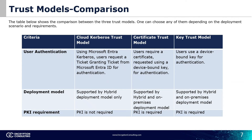Let's now compare the trust models. In the cloud Kerberos trust model, when users want to authenticate, they request a ticket-granting ticket from Microsoft Entra ID. In the certificate trust model, users are given a certificate to authenticate themselves, while in the key trust model, a device-bound key is used. The cloud Kerberos trust model is supported by the hybrid deployment model only, whereas certificate and key trust models are supported by both hybrid and on-premises deployment models. For the cloud Kerberos trust model, PKI is not required, whereas for the certificate and key trust models, PKI is required.